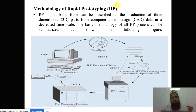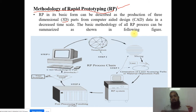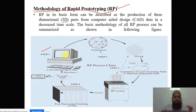The methodology of rapid prototyping is very important — you have to know what the methodology is. RP is basically described as the production of a three-dimensional part, i.e., 3D printing, from a computer-aided design by the assistance of computer data in a described time scale. The basic methodology of all the RP processes can be summarized as shown in the following figure. Initially, step one: first we design the part in any solid modeling software by use of a computer.